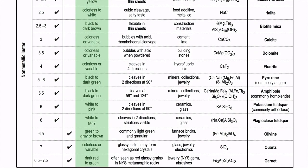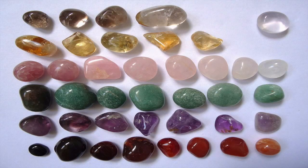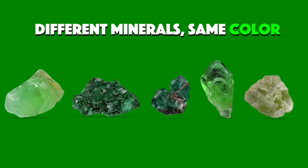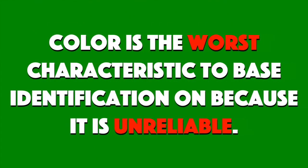Let's start with color. Now color seems like it would be a very easy test to perform — all we need to do is look. But there's a problem with mineral color. Minerals exist in almost every color. When we look at our earth science reference table on the very last page, there's a column dedicated to color, and when we observe these colors for any mineral, it's never one color — it's a range of colors. Some are colorless.